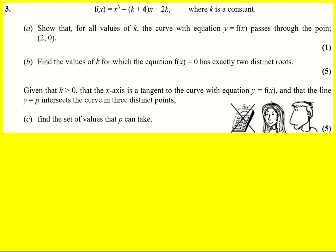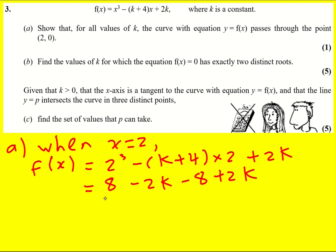f(x) is a cubic polynomial with this constant k in there, and we're asked to show that for all values of k it will go through (2,0). So you can substitute x equals 2 in, and these will cancel to give zero, therefore...